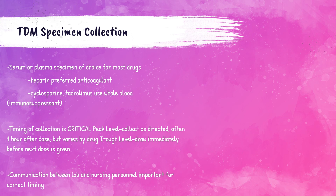When collecting a specimen for a TDM test, timing of the draw is absolutely critical. TDM can be a random draw, meaning it can be collected at a random time of the day. A TDM peak level must be collected as directed, usually one hour after a dose of the medication is given. A TDM trough level must be drawn immediately before the next dose of the medication is given.